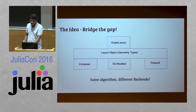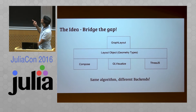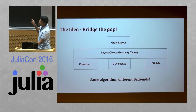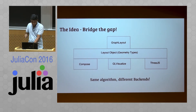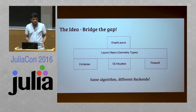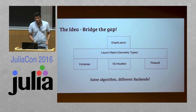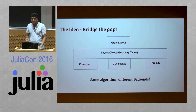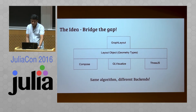My project is to bridge the gap in between, so that GraphLayout will no longer be coupled with Compose. It will be decoupled and will generate a layout object that can be used with different back-ends. Towards the end of the project, we'll have a back-end agnostic GraphLayout, and we can use the same algorithm with multiple back-ends without redundancy in code.